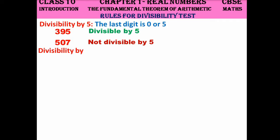For divisibility by 6, since 6 is a composite number with factors 2 and 3, you simply apply both the divisibility rules for 2 and 3 to the number. If it satisfies both, it is divisible by 6.